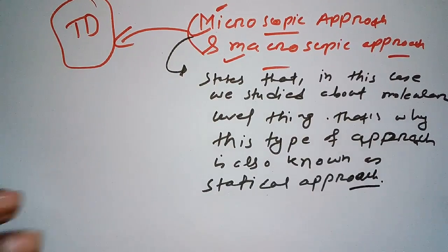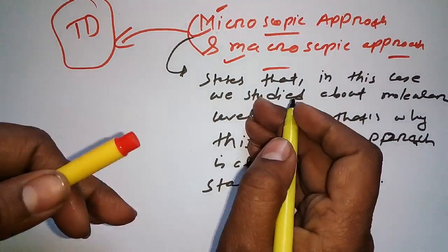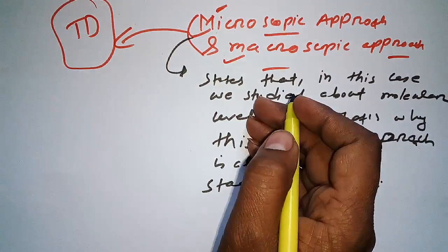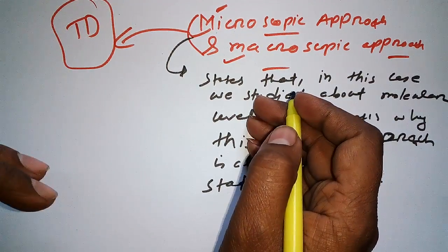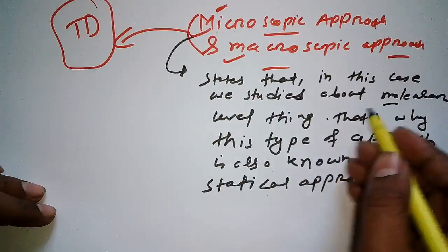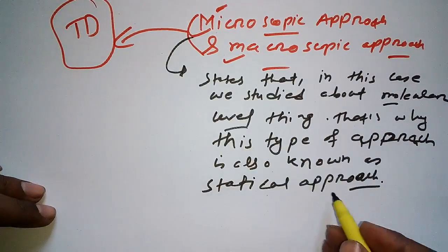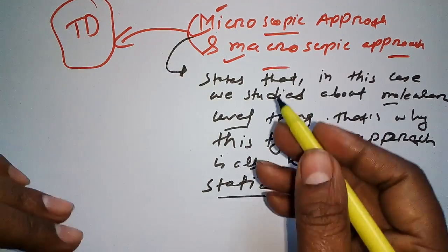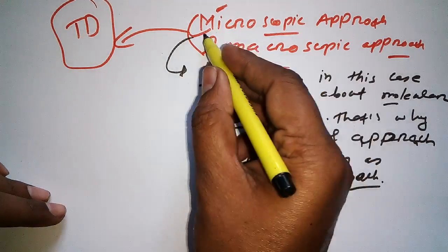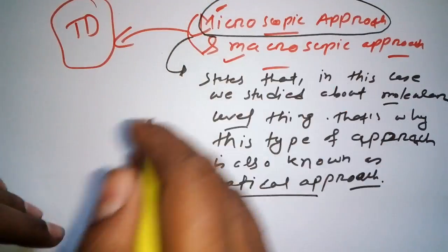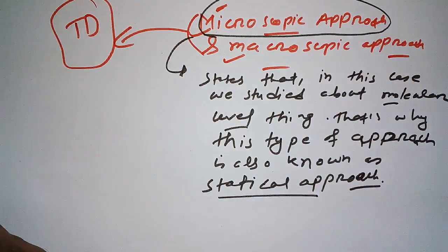If we are studying anything in a field at the molecular level, that is a statistical approach, and that approach is known as the microscopic approach.